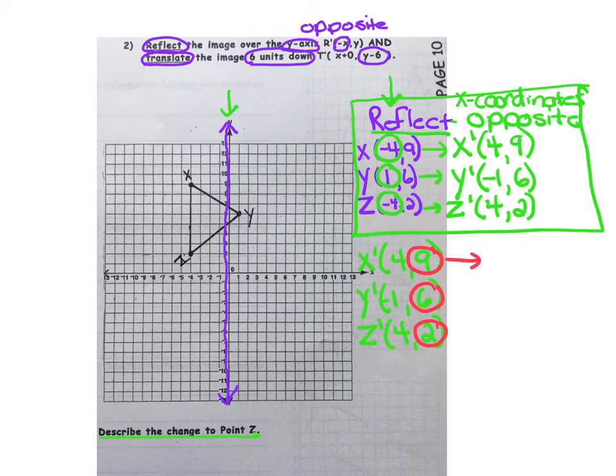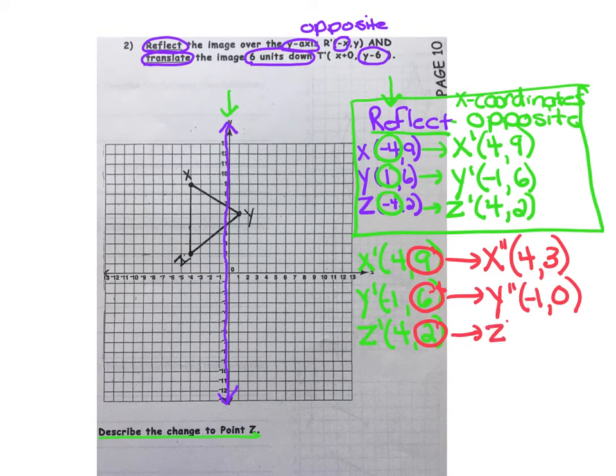As we take x prime and subtract 6 from the 9, our x double prime becomes 4, 3. For y, our y double prime becomes negative 1, take away 6, 0. And lastly, our z double prime, as we take away 6 from 2, becomes 4, negative 4.